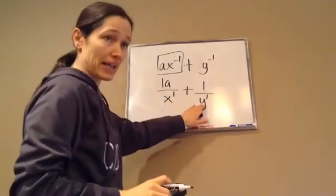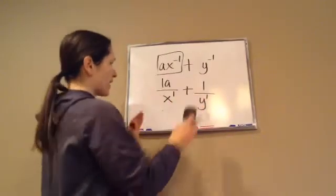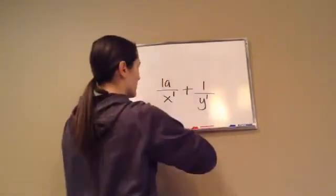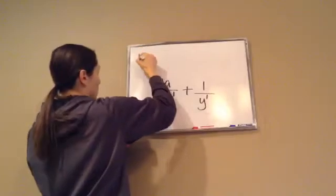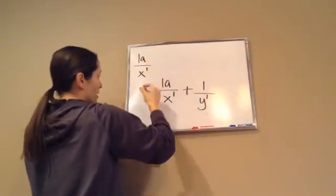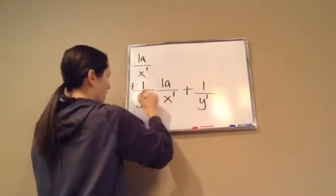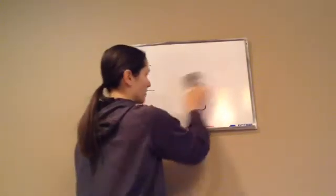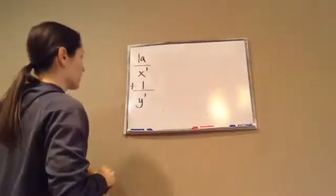Now, this is adding. So from here, we're going to write them down vertically. So I've got a over x to the 1 plus 1 over y to the 1. And all I've done is wrote that problem vertically.